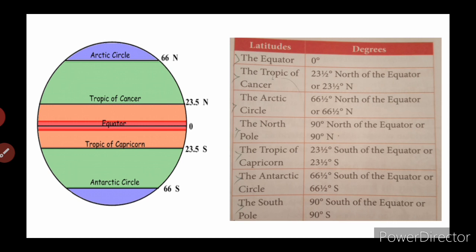The Tropic of Capricorn is 23 and a half degrees south of the equator, or 23 and a half degrees S. In the small section, they have given it here. The Antarctic Circle is 66 and a half degrees south of the equator, or 66 and a half degrees S. The South Pole is 90 degrees south of the equator, or 90 degrees S.